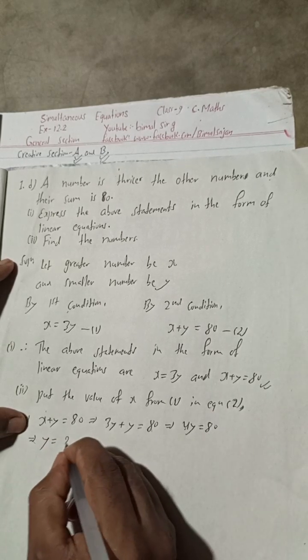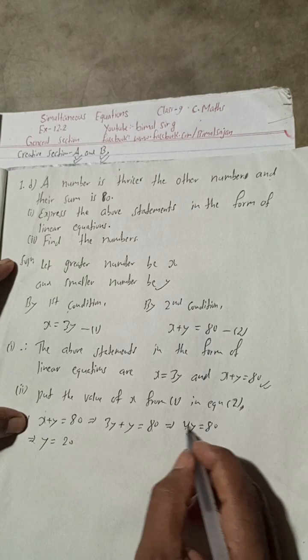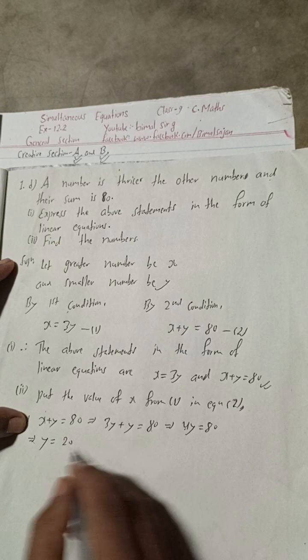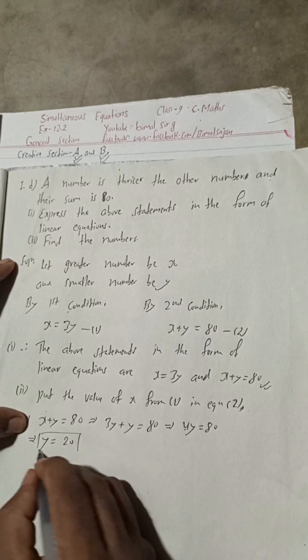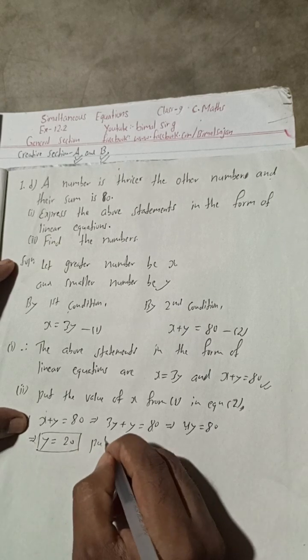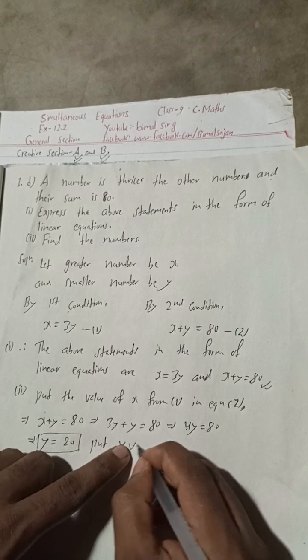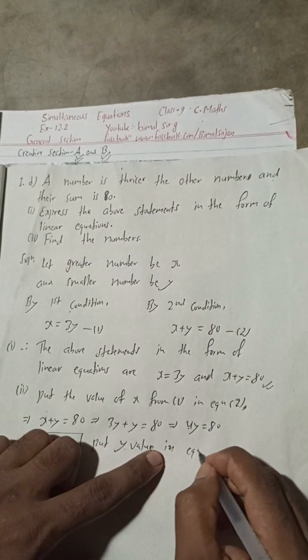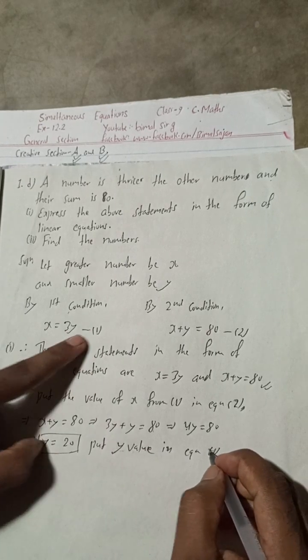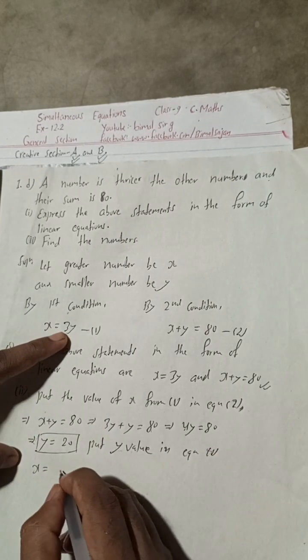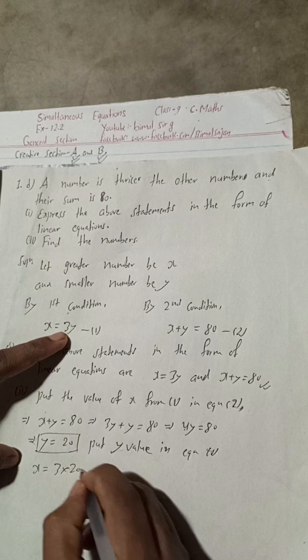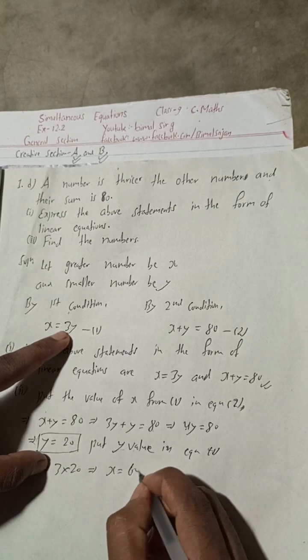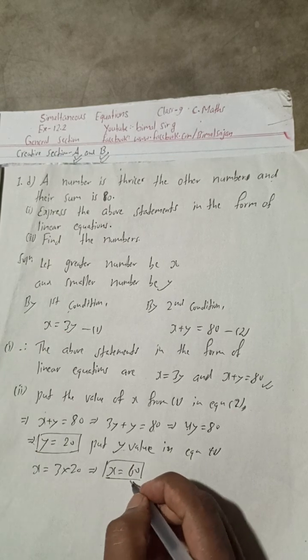This will be 20, so Y equals 20. Put Y value in equation one, so X equals 3 times Y equals 3 times 20. This implies X equals 60.